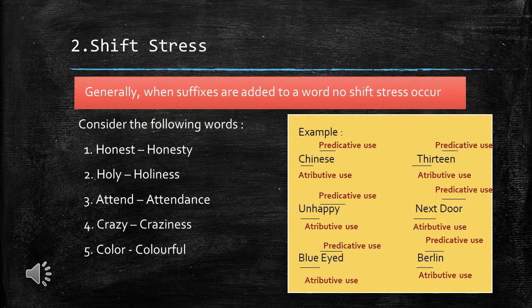Shift stress: Generally when suffixes are added to a word, no shift in stress occurs. Examples include: honesty/holiness, attend/attendance, crazy/craziness, color/colorful.